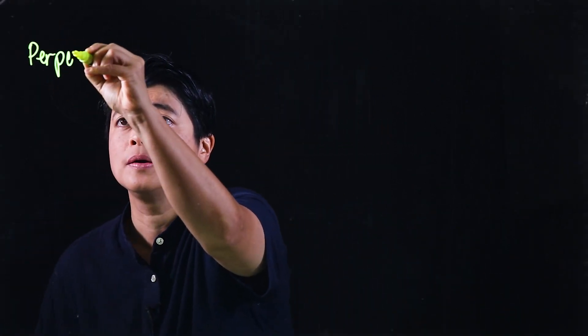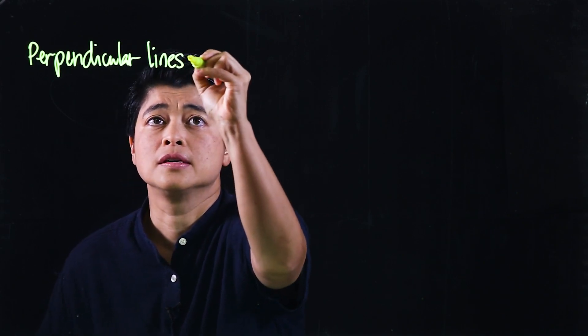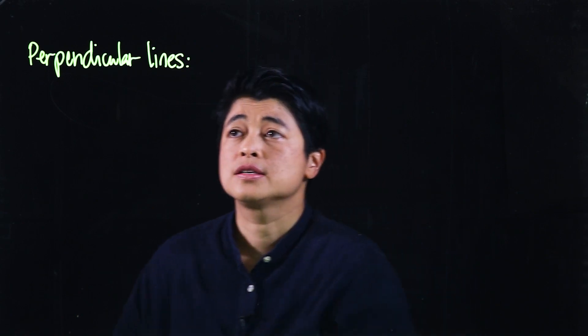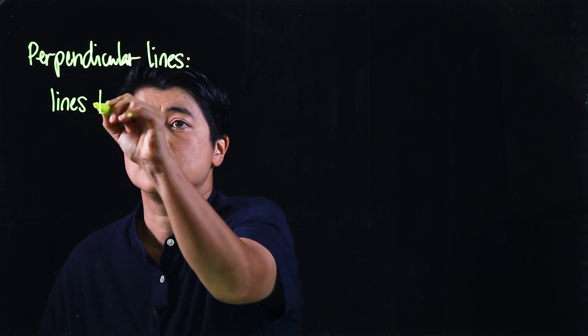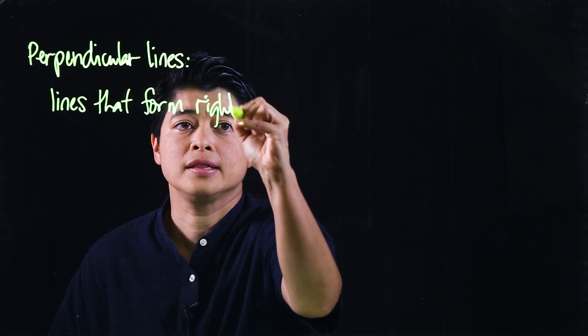Chapter 15, Lesson 1 is about perpendicular lines. We will be using the same tools that we used in Chapter 14, which is your straight edge or your corner. The lesson is about perpendicular lines — these are two lines that meet to form right angles.